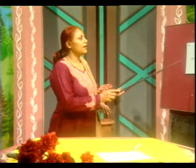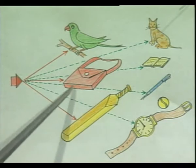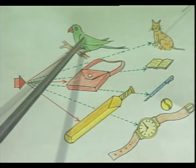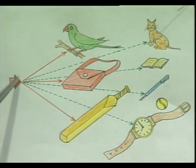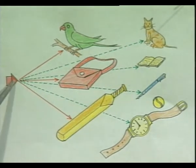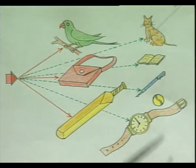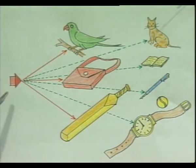Aur jo object door hote hain unke liye hum 'there' use karte hain. Now I will show some examples — here I am standing at the center point, and these objects are near to it: this parrot, this bag, and this bat — they are near to the center point. Then the cat is there, the book is far from this point, and the pen is far from this point — these things are far from here.